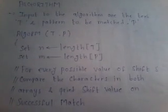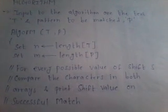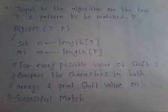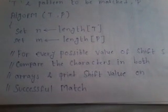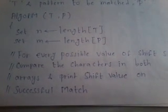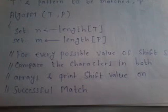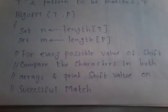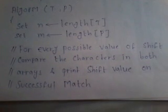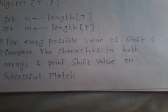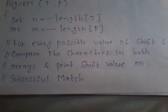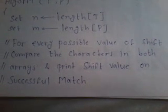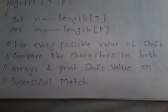Now, what is the algorithm? The input to the algorithm are the text T and pattern P to be matched. The length of text T is computed as N, and the length of pattern P is computed as M. For every possible value of shift S from left to right, we compare the characters in both arrays and print the shift value of S on a successful match.